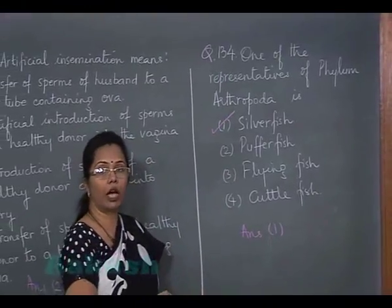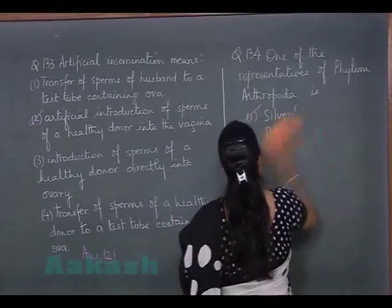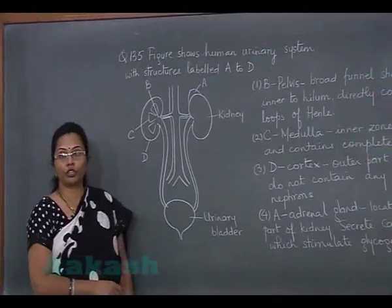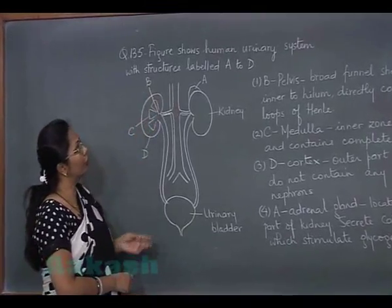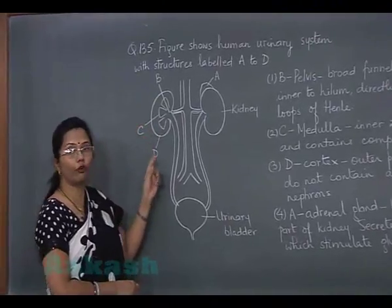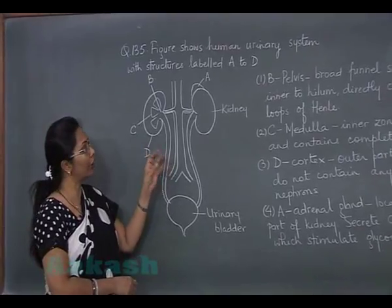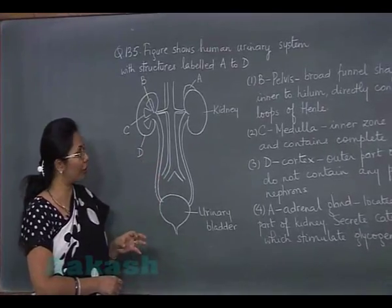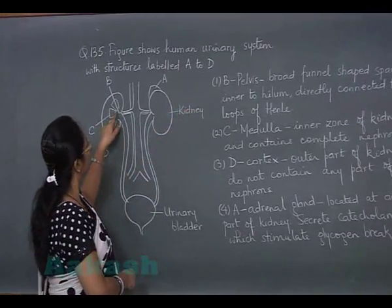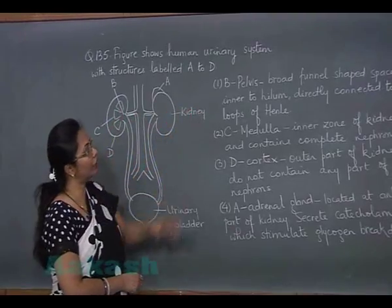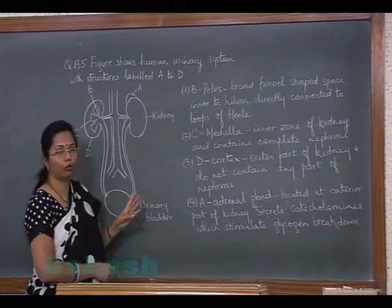Question 135, the last question of the biology section: This figure shows the human urinary system with four parts labelled A to D, and we have to identify the correct labelling along with the function. Option 1 states B is the pelvis — a broad funnel-shaped space inner to the hilum, but not directly connected to loops of Henle.